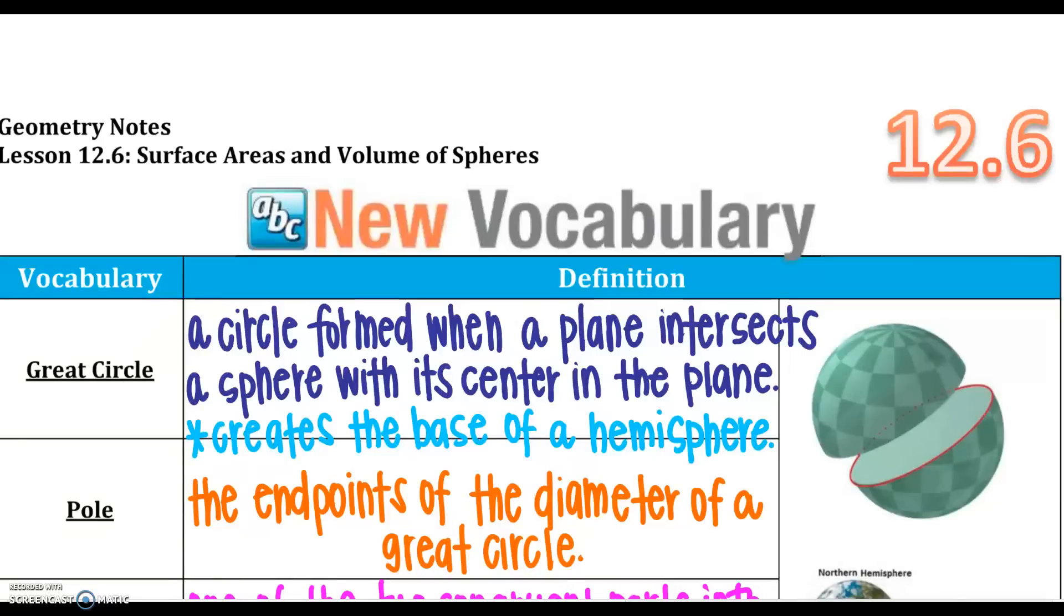This is section 12.6, and we are going to clump surface area and volume of spheres in one section. Remember, surface area is in units squared. Volume is in units cubed.